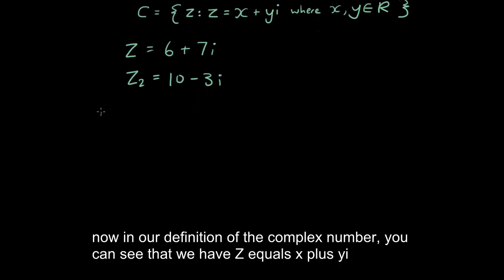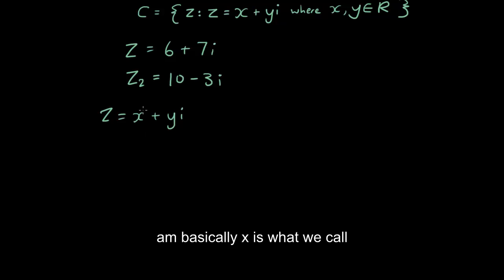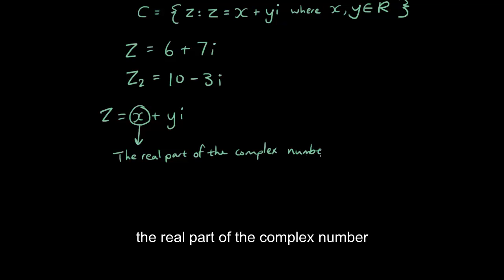you can see that we have z equals x plus yi. And basically x is what we call the real part of the complex number. And you can also write it as Re(z) equals x.